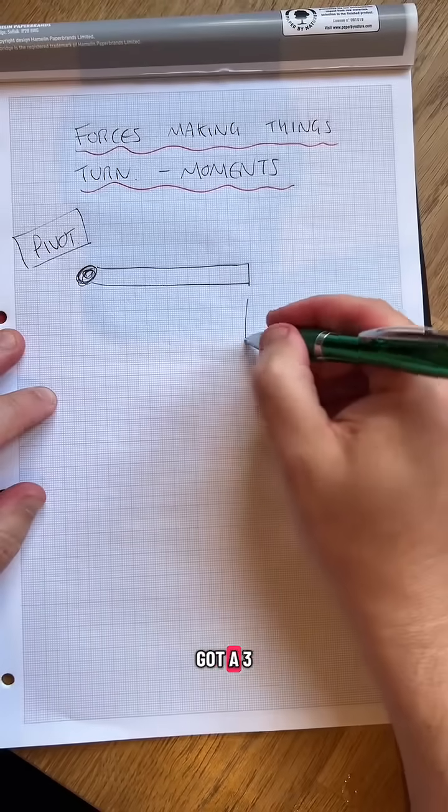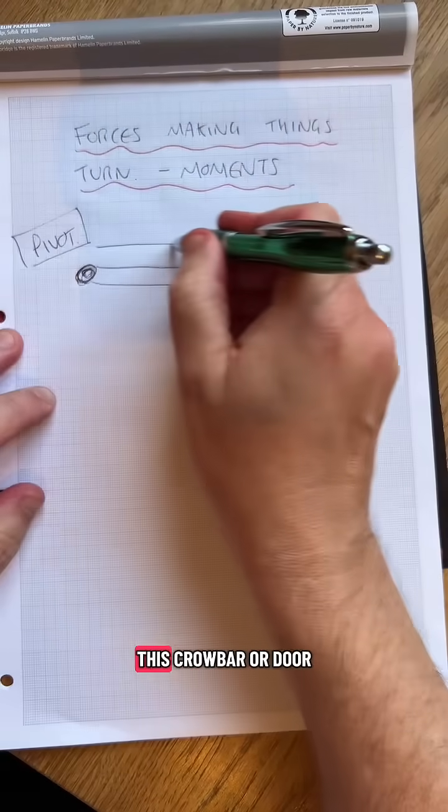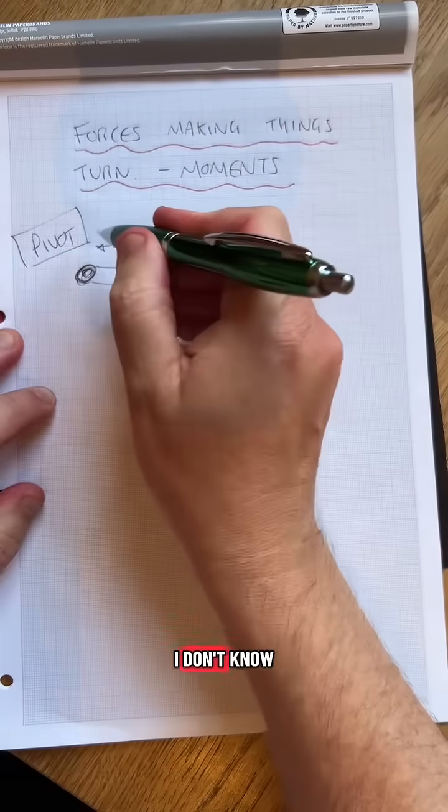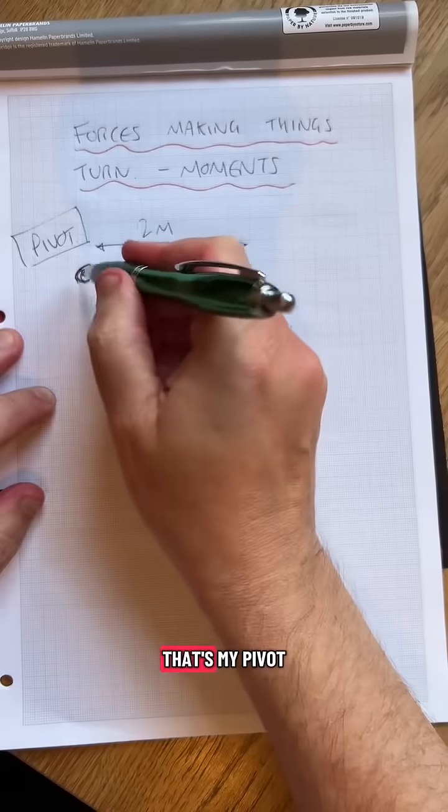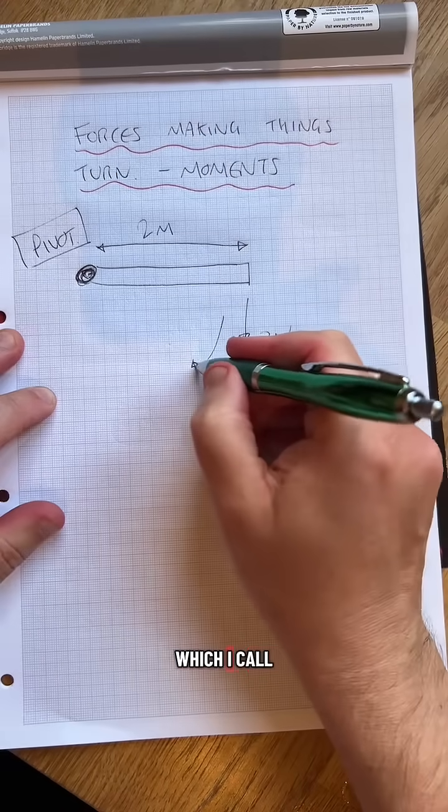Let's say I've got a three newton force coming there. Three newtons and the length of this crowbar or door, let's say two because that's my pivot point. It's going to rotate about that point. It's going to make it go that way, which I call clockwise.